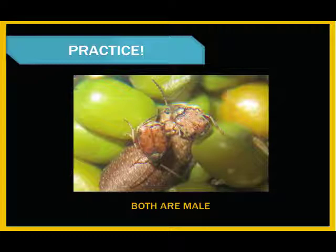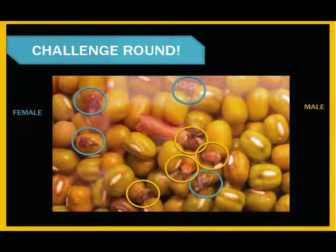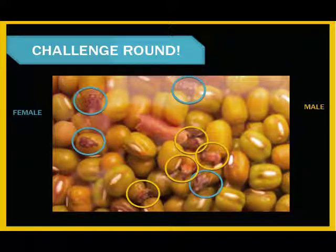This one is a bit trickier, as both are males. Notice that neither has an X pattern on the back, and both appear smaller in size. Now let's try one more time. With so many beetles to look at, that round was even more challenging. The four beetles indicated by the blue circles are females, identifiable as a result of their comparatively large size and the X pattern on their backs, while the four beetles indicated by the yellow circles are males, as they are relatively small and boxy and boast only the brown color on their backs.